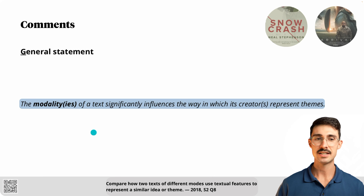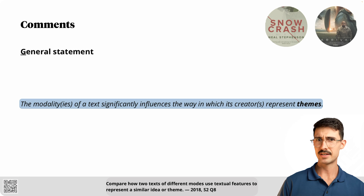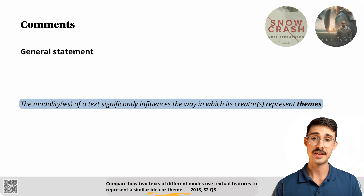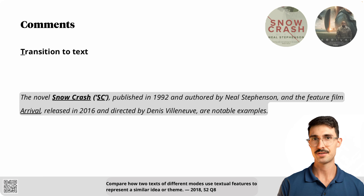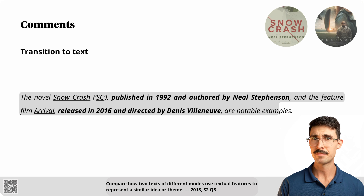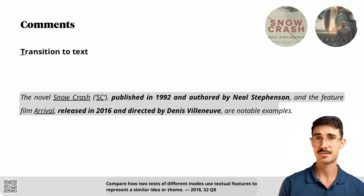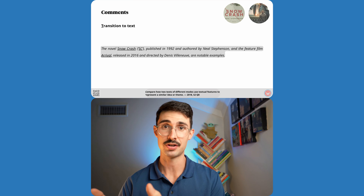Let's discuss some comments in relation to this introduction. Starting with the general statement: the word 'modality' with brackets for the plural is a subtle way of telling the marker that I acknowledge text can be multimodal and foreshadows that one of the texts I'll analyse will be multimodal. Like the previous example, this sentence tells the marker I know the question requires me to discuss a similar idea or theme, and that I've chosen themes. Now onto the transition to text. Like the other examples, I don't have to write Snow Crash every single time when SC will suffice. This is a small change but it really adds up over the entirety of an essay. This element also states the essential info about each text — when each was released and who authored or directed it. This sentence transitions from the general statement to the plot synopsis of both texts by introducing them.